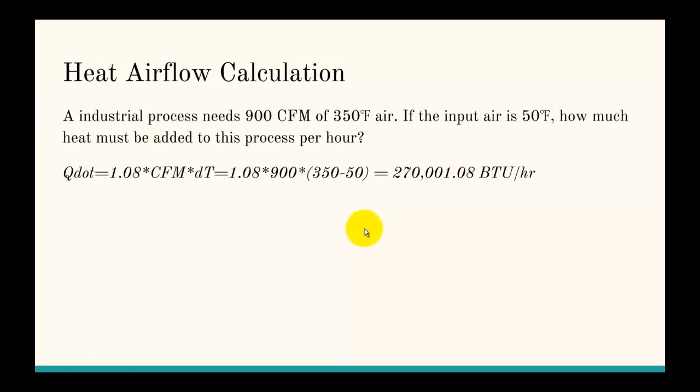Now let's look at heat air flow. If an industrial process needs 900 CFM of 350 degree air and the input air going in is 50 degrees, how much heat must be added to this process per hour?